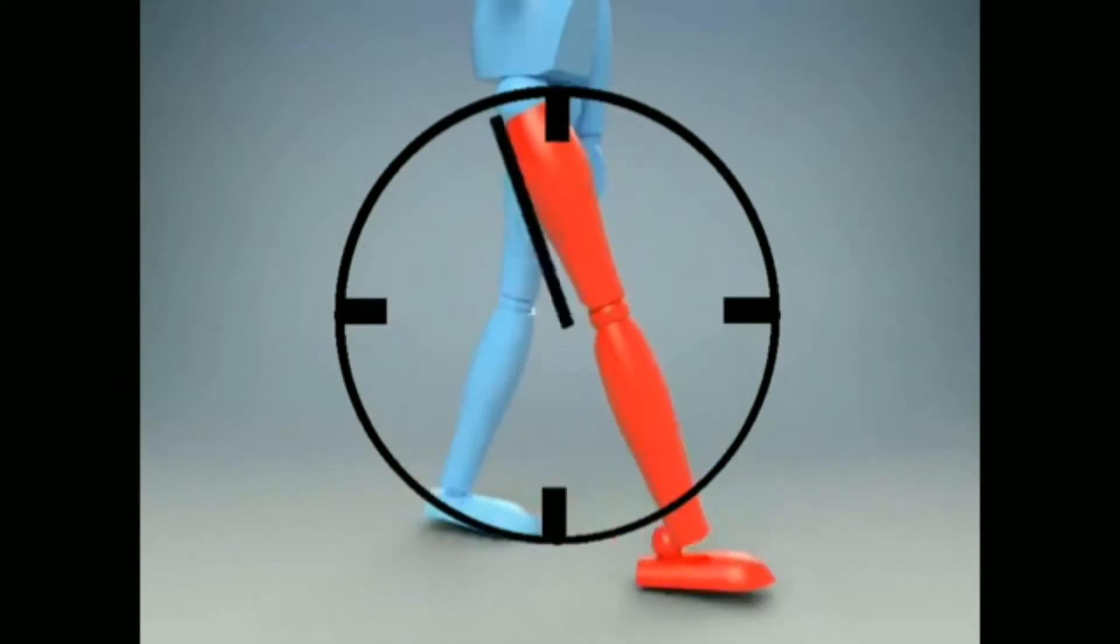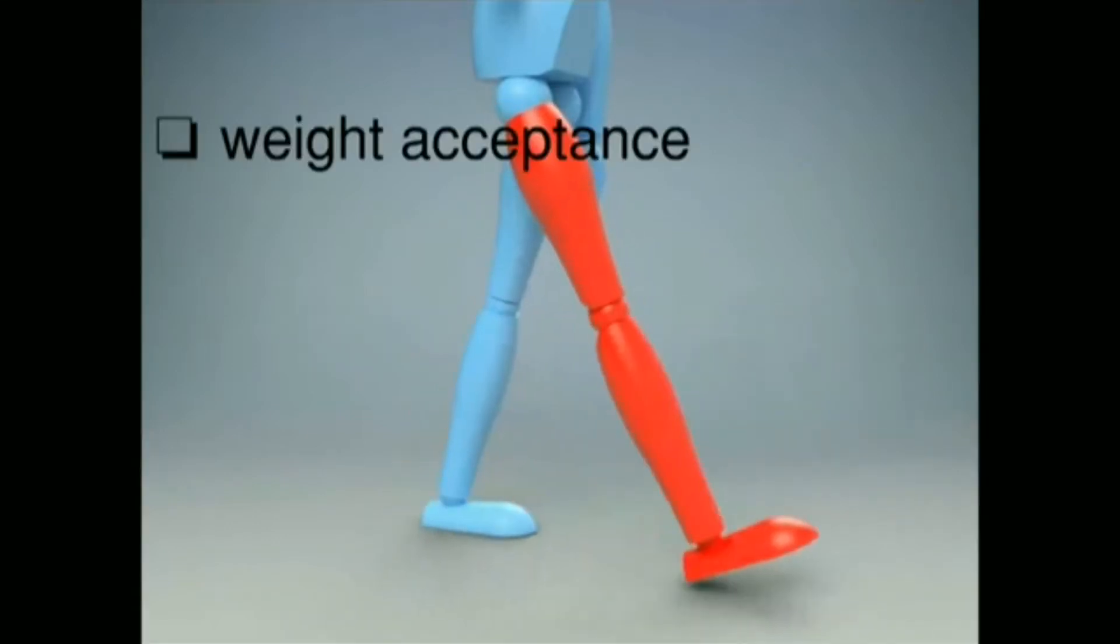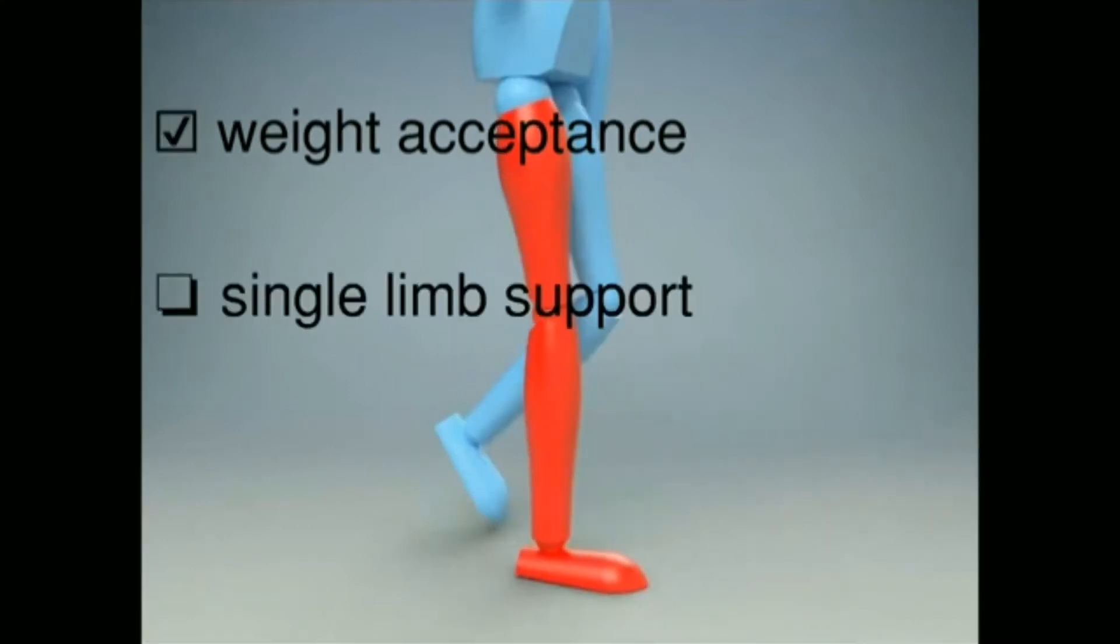First is weight acceptance, meaning the leg can't collapse when you first stand on it. The second is single limb support, meaning the leg must hold you up while your momentum is carried forward.